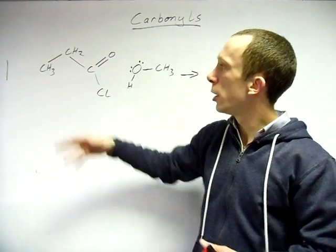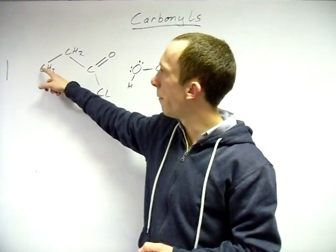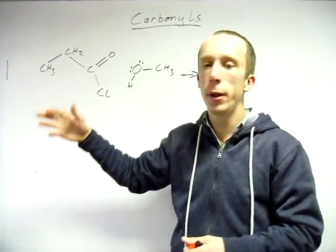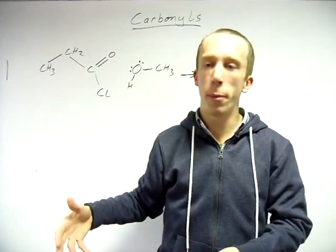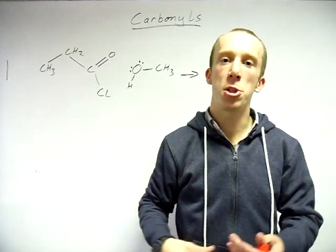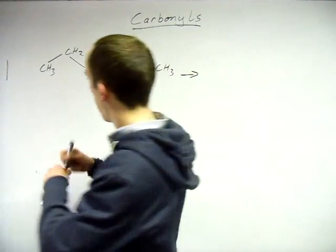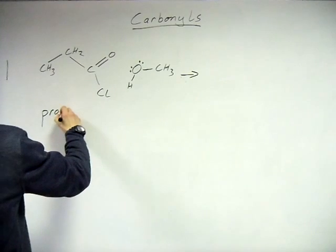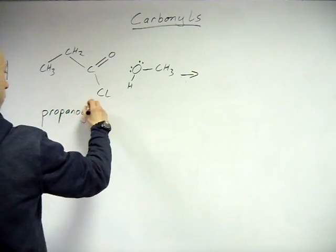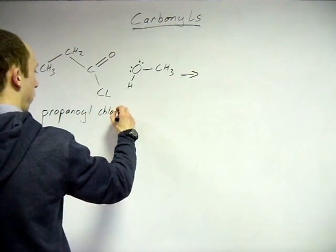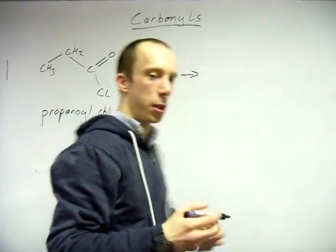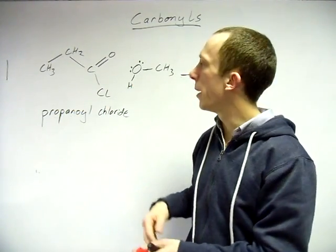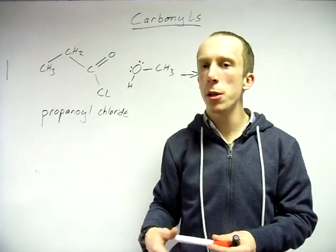With the acid chloride — you should know how to name these. Effectively you just look at the number of carbons: for propane with single bonds, you just add 'oyl chloride' on the end. So: propanoyl chloride. Not too difficult.